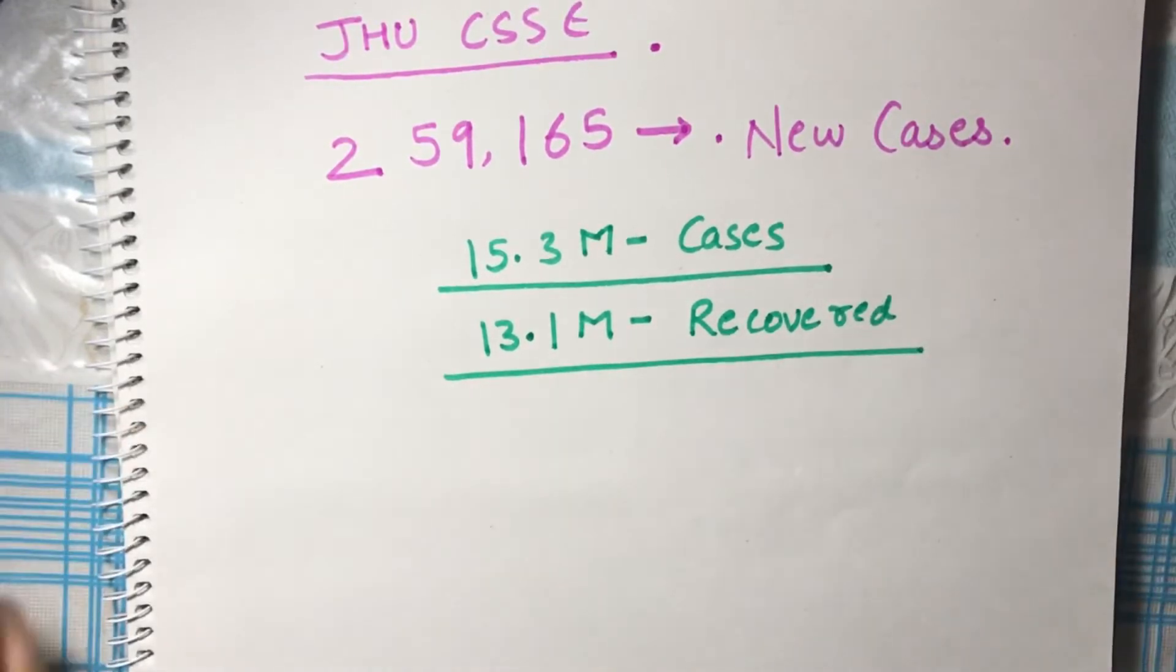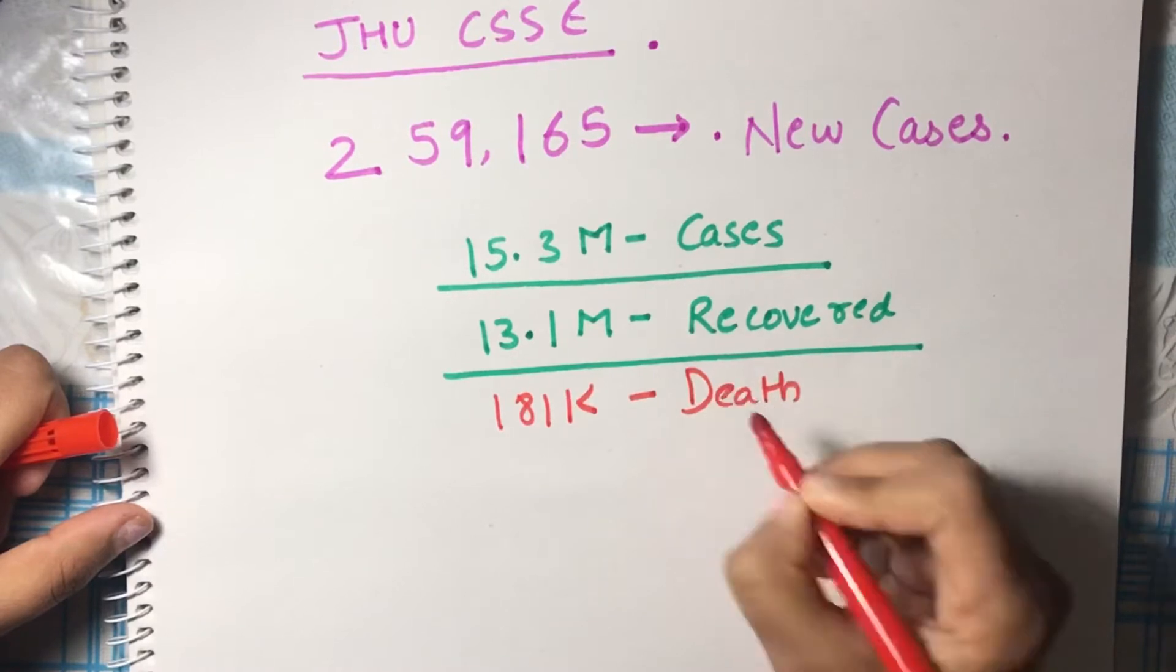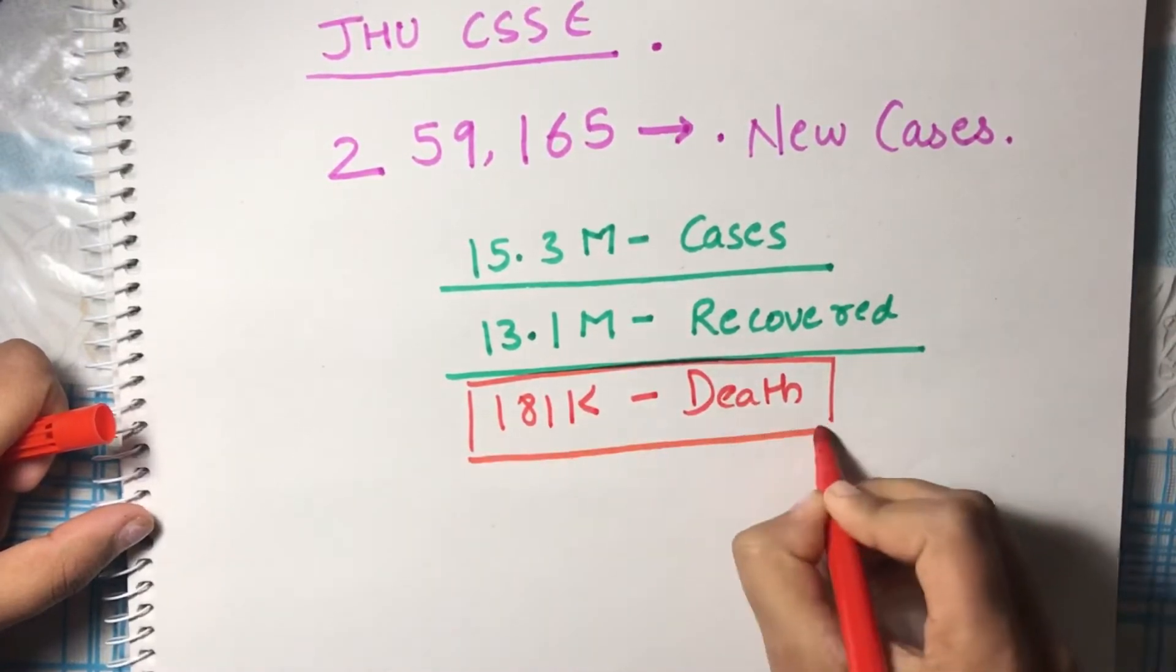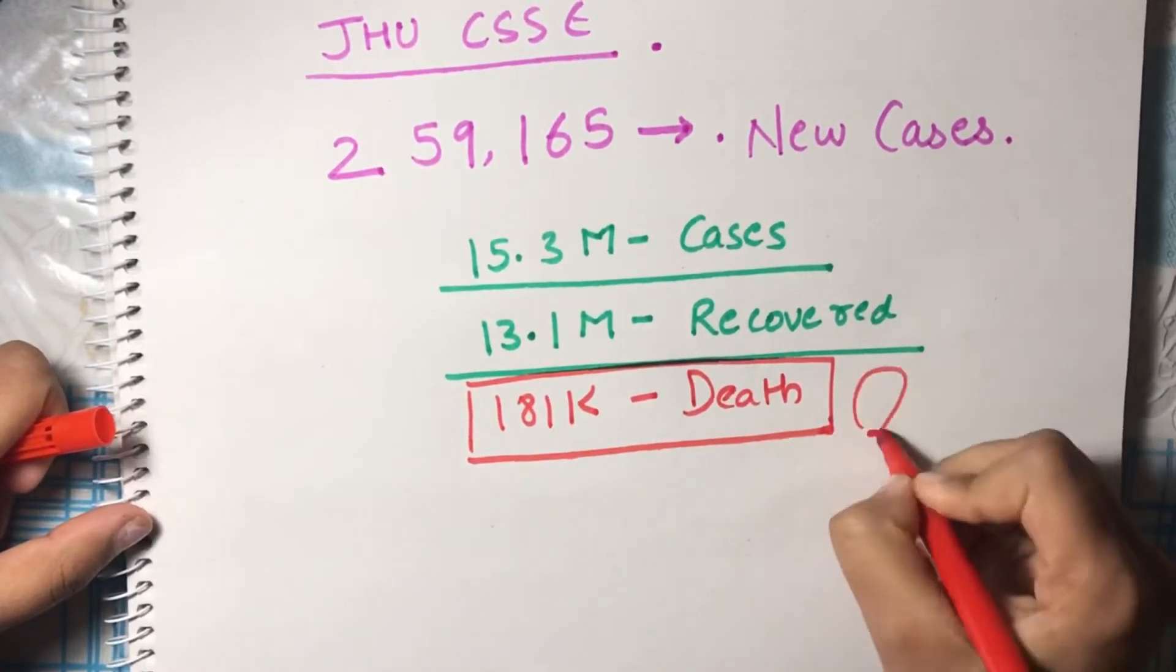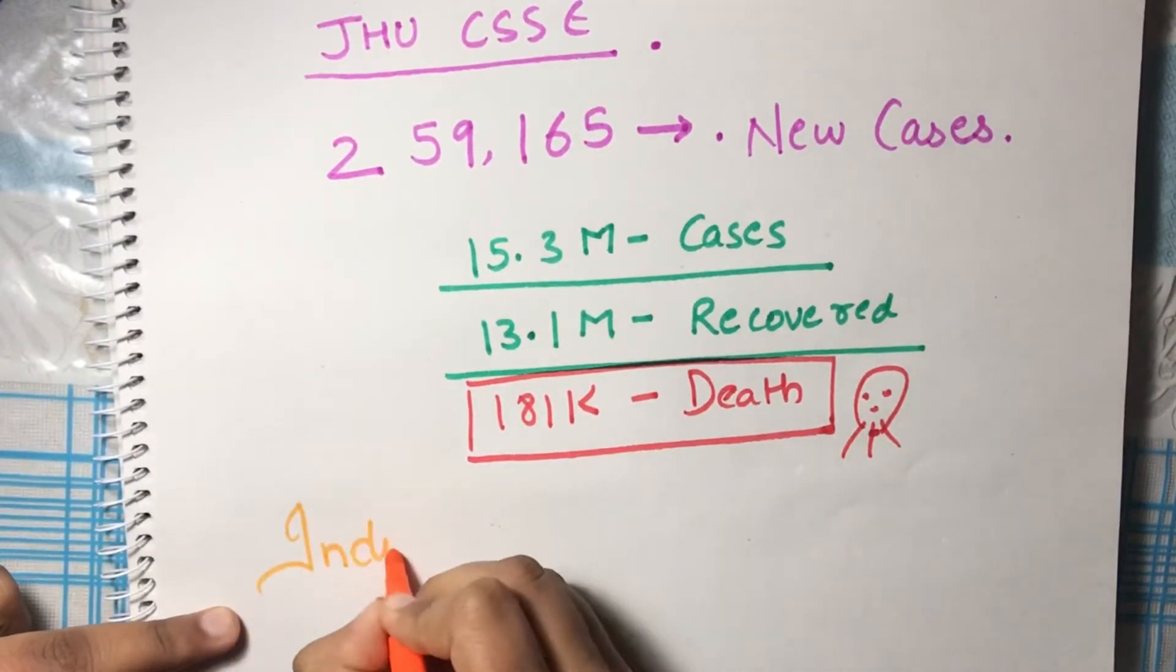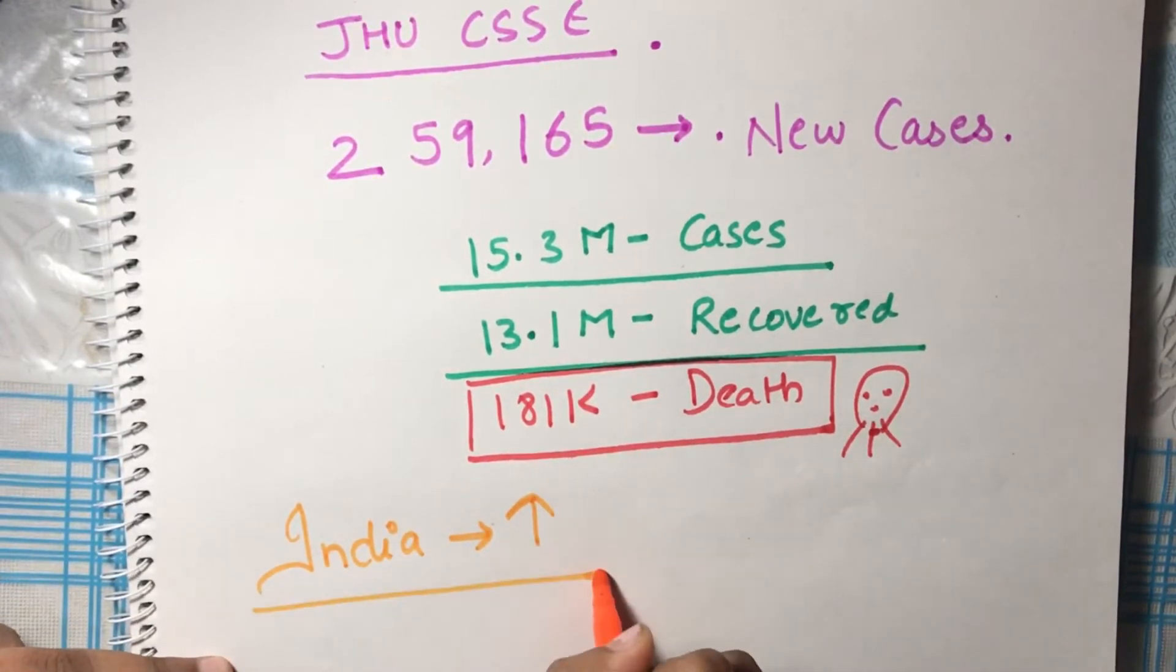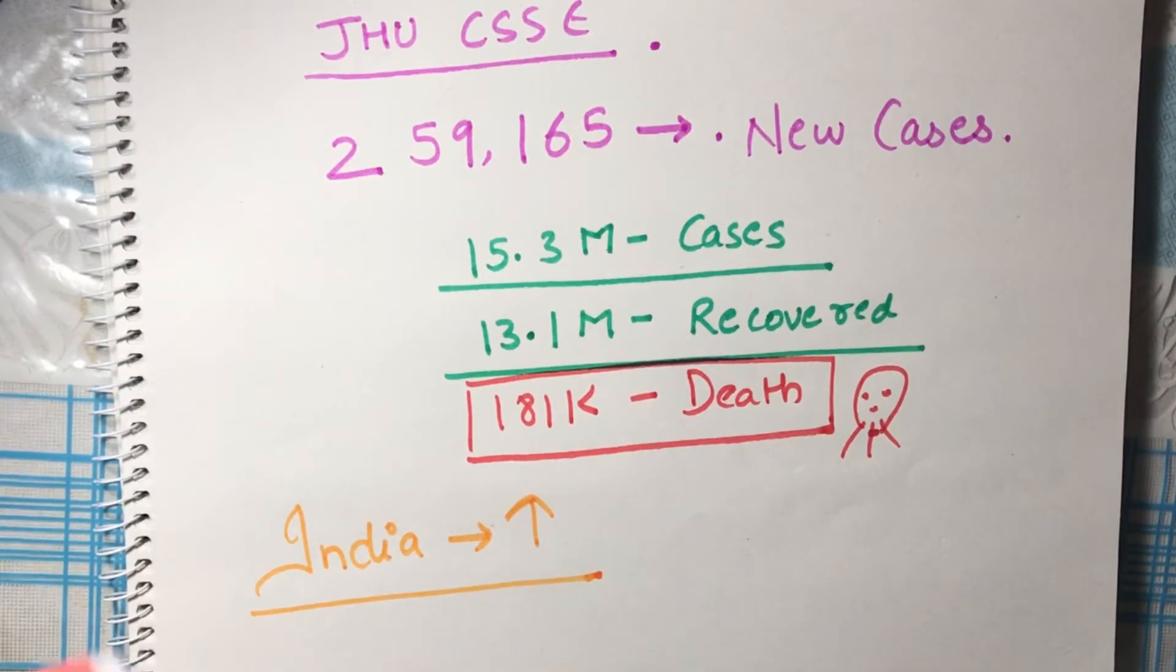But a huge, scary number—181,000 deaths. This is dangerous, really ridiculous. India has reported the highest ever single-day spike in COVID-related deaths, which is not at all a good sign for India.